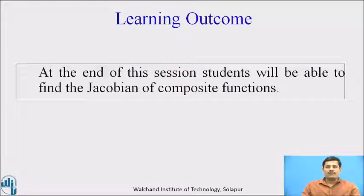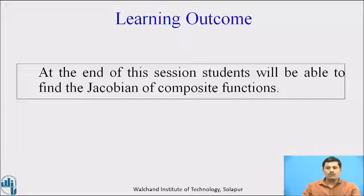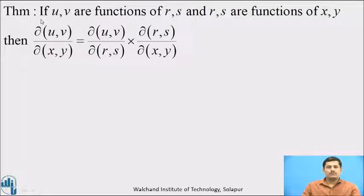Learning outcome: at the end of this session students will be able to find the Jacobian of composite functions. This is the second property.